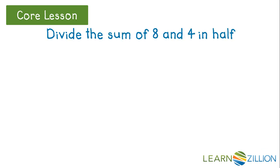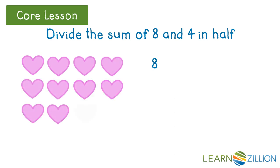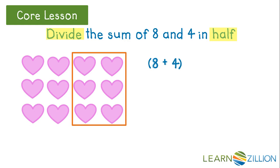Divide the sum of 8 and 4 in half. Sometimes it's very helpful to sketch a little picture that will help you understand what the description means. We can draw 8 hearts and then we can draw 4 more hearts to represent 8 plus 4. Now we want to divide that in half. Dividing something in half is the same thing as breaking it into 2 equal sized groups. So we can put 8 plus 4 in parentheses to show that that's the size of our group, 12 hearts, and divide that by 2.